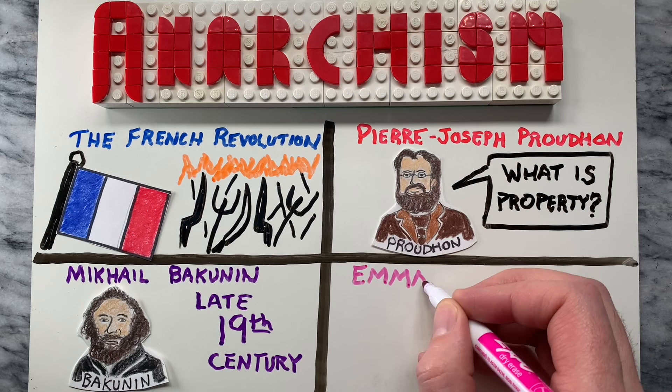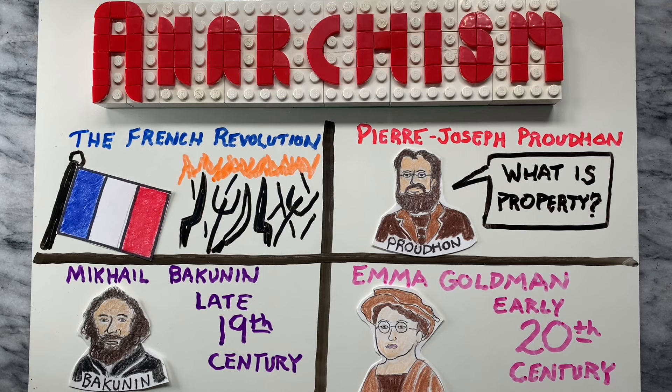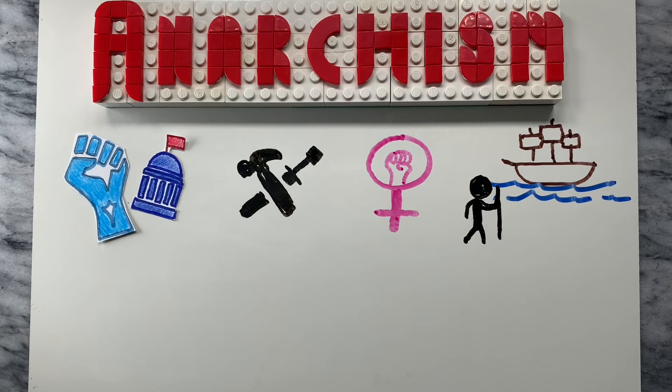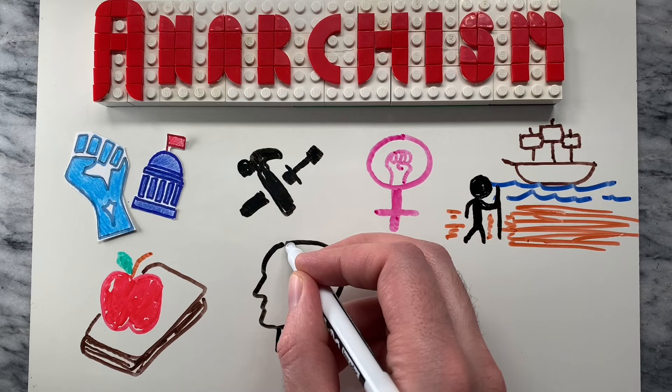Emma Goldman, an American feminist anarchist and writer, was a prominent figure in the early 20th century. Anarchism has been influential in many social and political movements throughout history, including labor movements, feminist movements, and anti-colonial movements. Anarchist ideas have also been influential in fields such as education, psychology, and environmentalism.